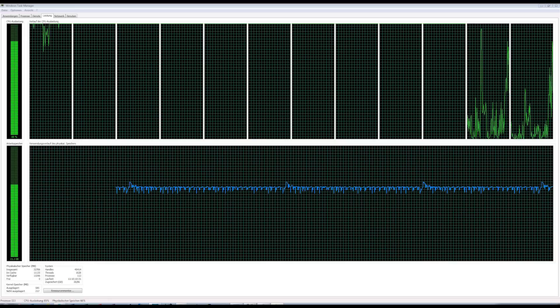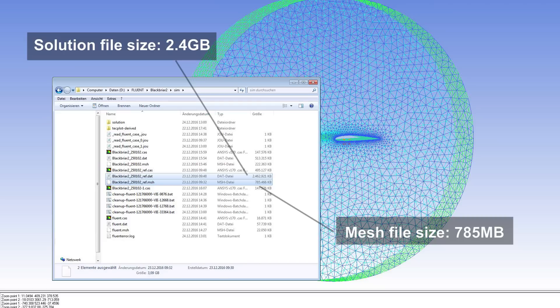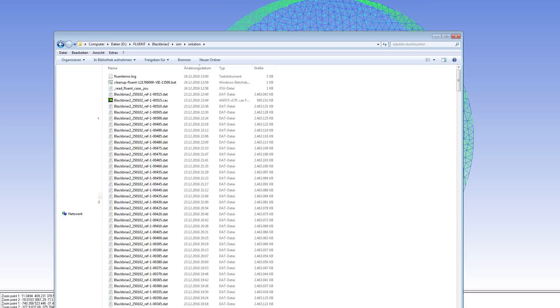I ran these simulations with ANSYS Fluent on a 12 core Intel Xeon machine with 32 gigs of RAM. The mesh has a size of 785 megabytes, and one solution file for a single time step results to 2.46 gigabytes of disk space. The transient simulation's time step size is 0.1 seconds. A complete solution was written to the hard drive every five time steps. 50 seconds of physical time was simulated, resulting in 100 files totaling 245 gigabytes.